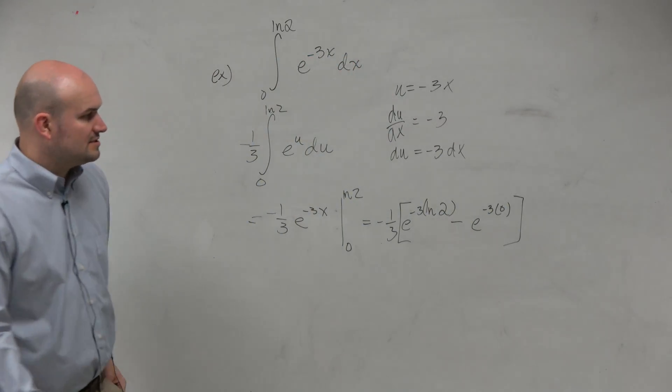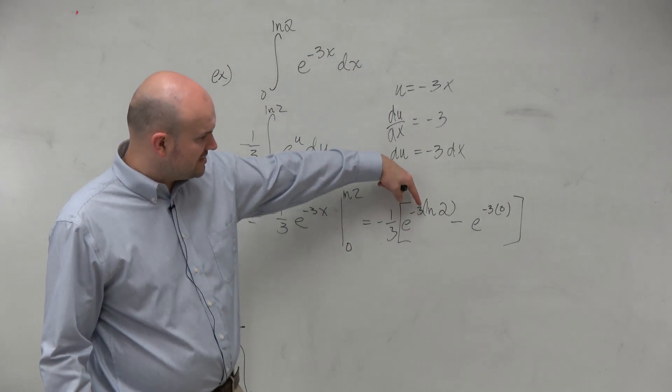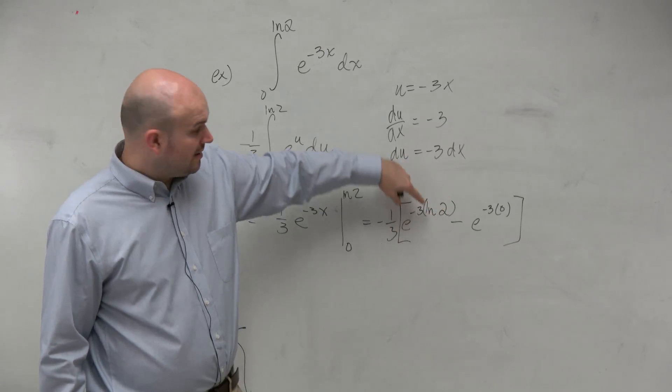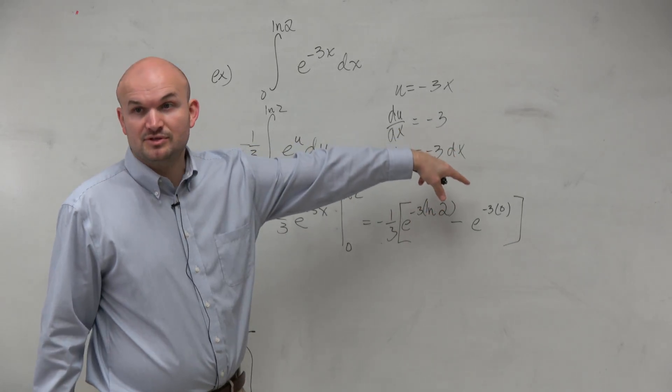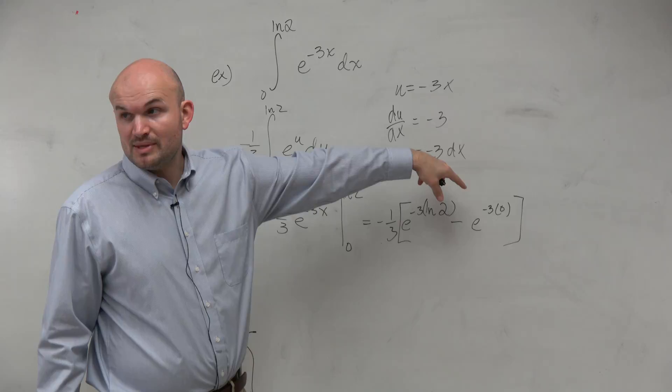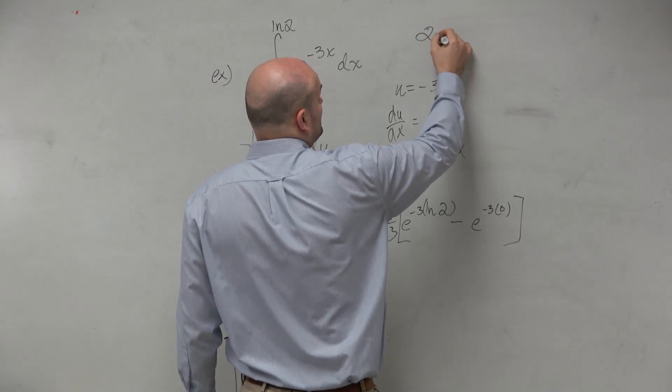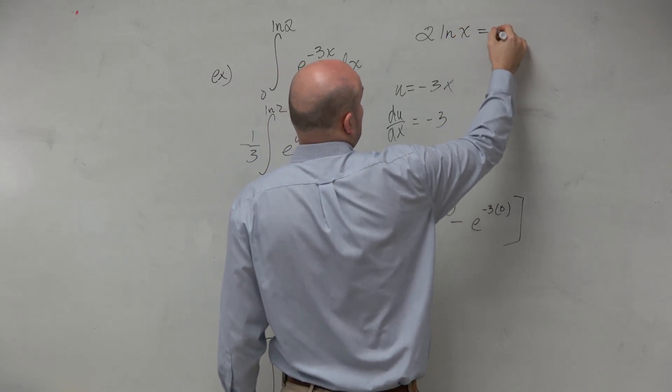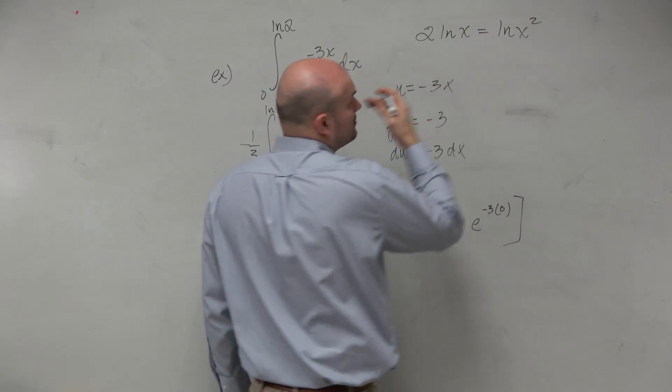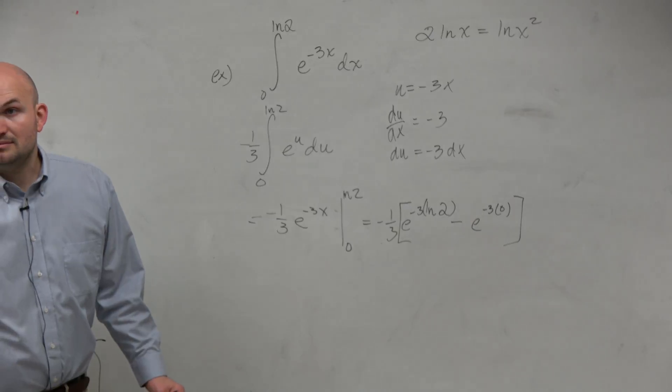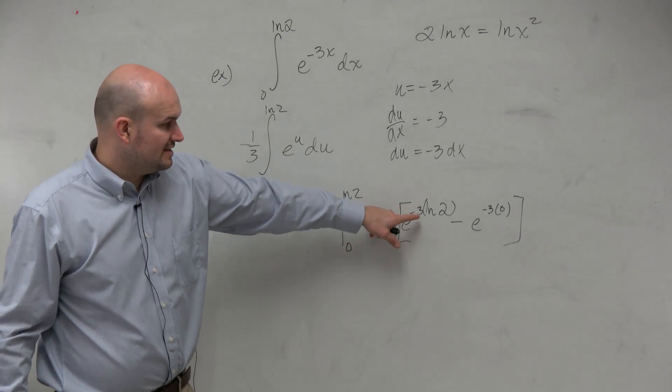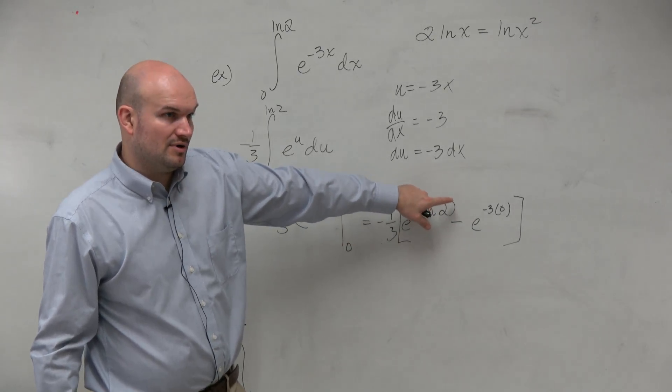Now, we do got to remember a couple things. Remember, whenever we have an exponent in front, you could always bring that up as a power. You guys remember that? Like 2 ln of x is the same thing as ln of x squared. Right? Do you guys remember that? OK. So I can take this negative 3 and put it to the power as 2.